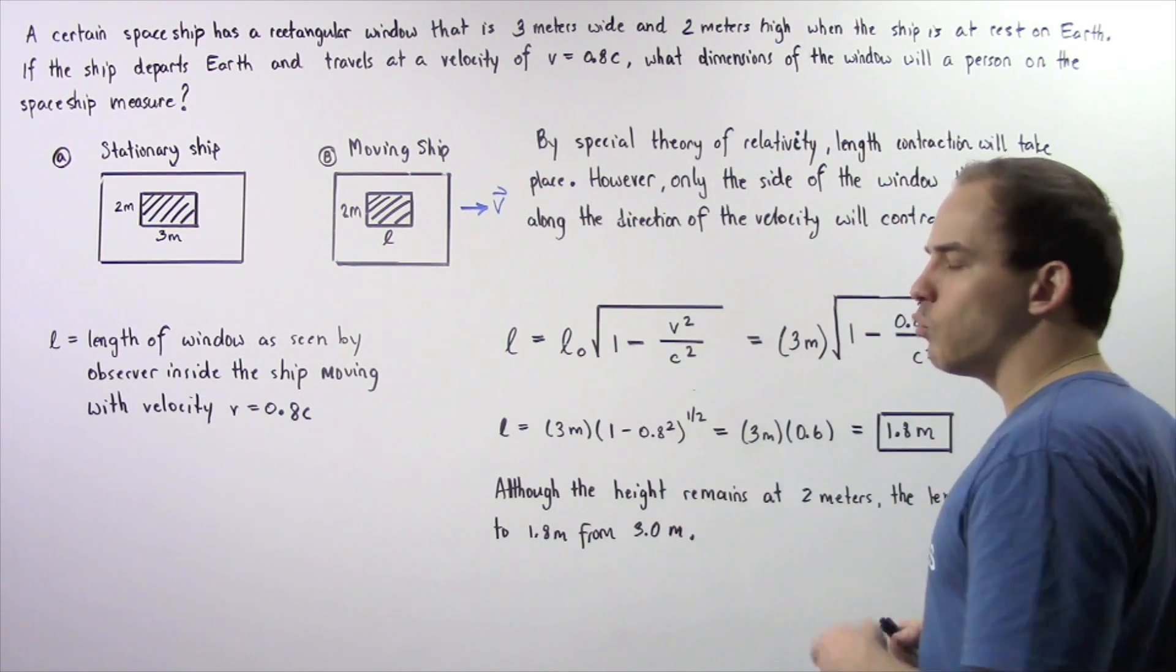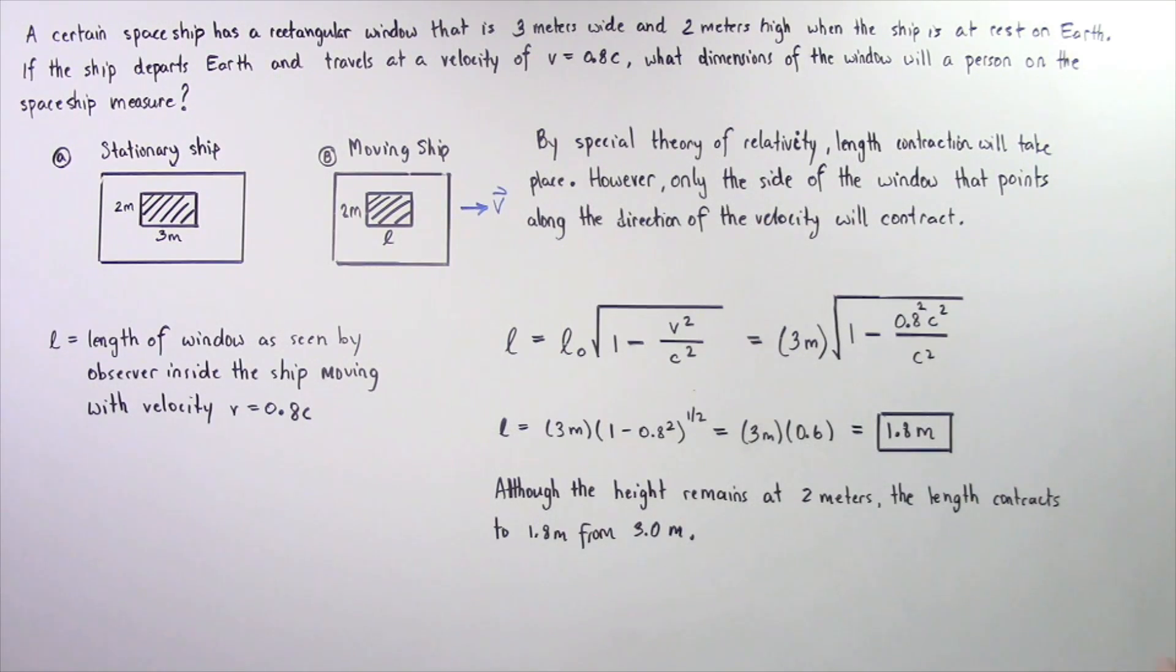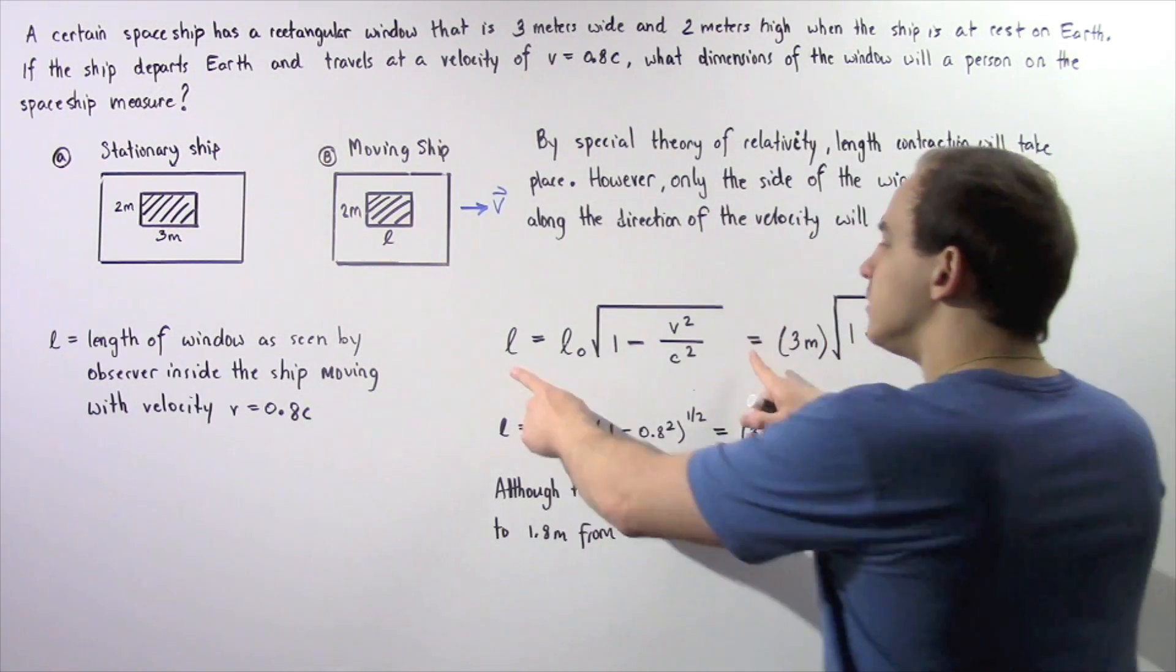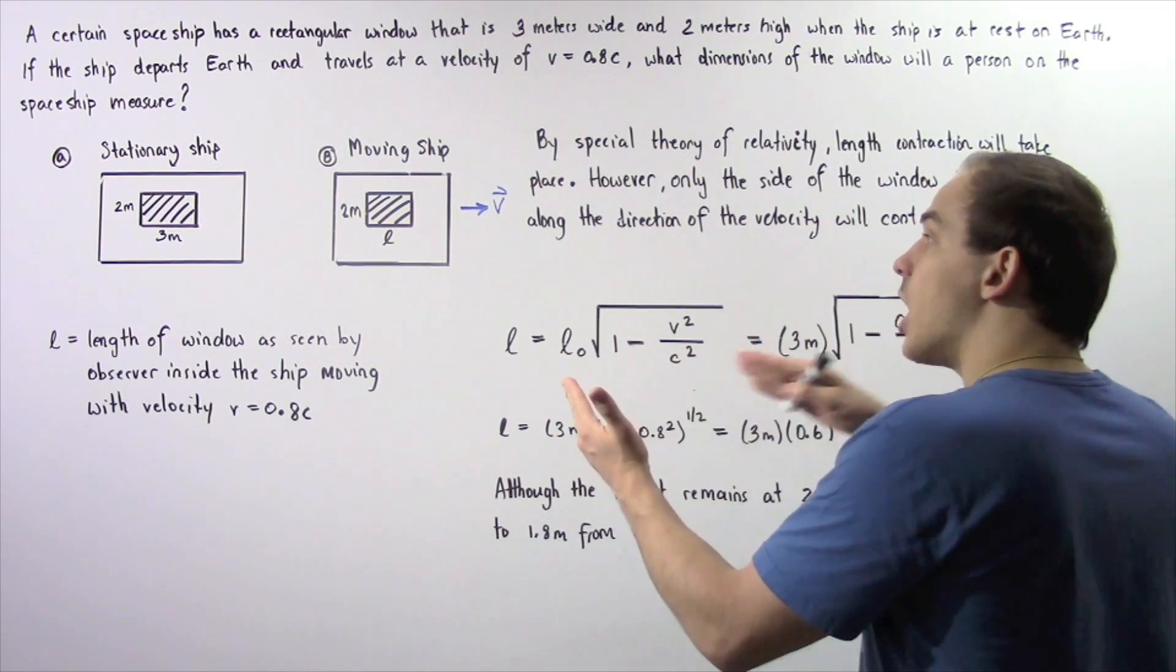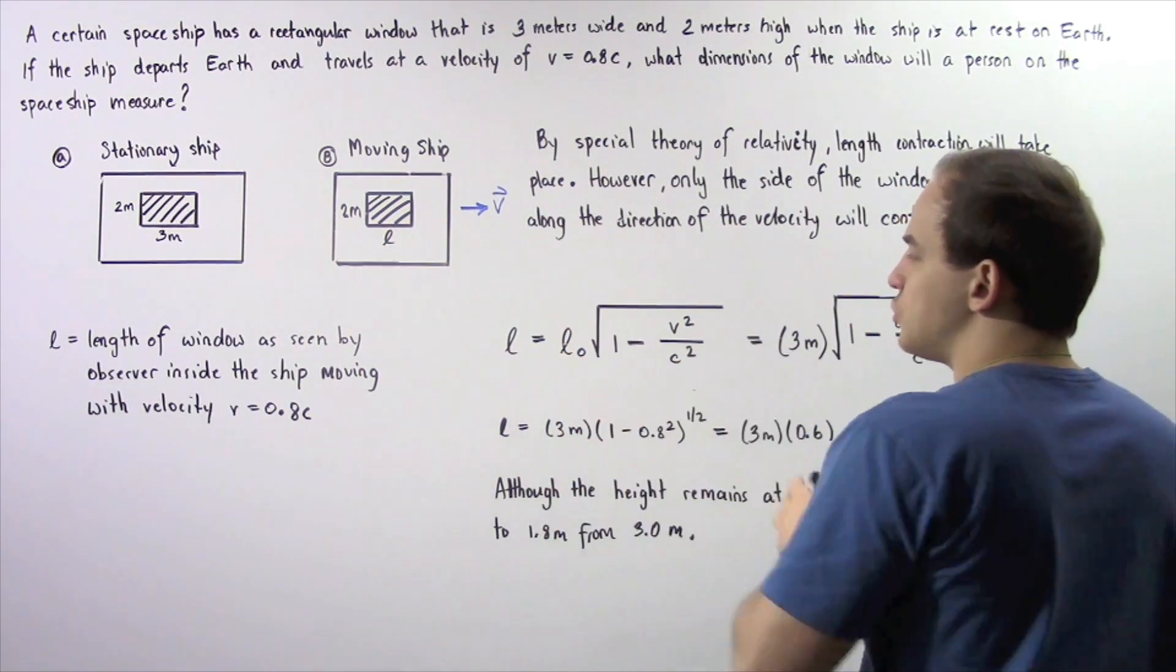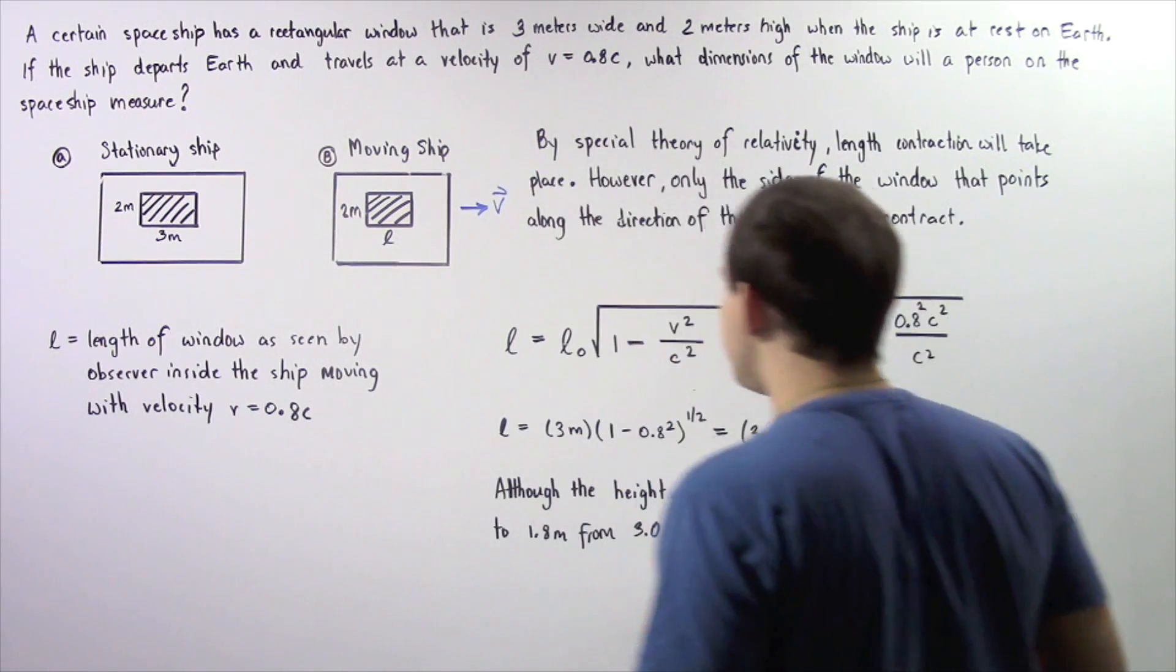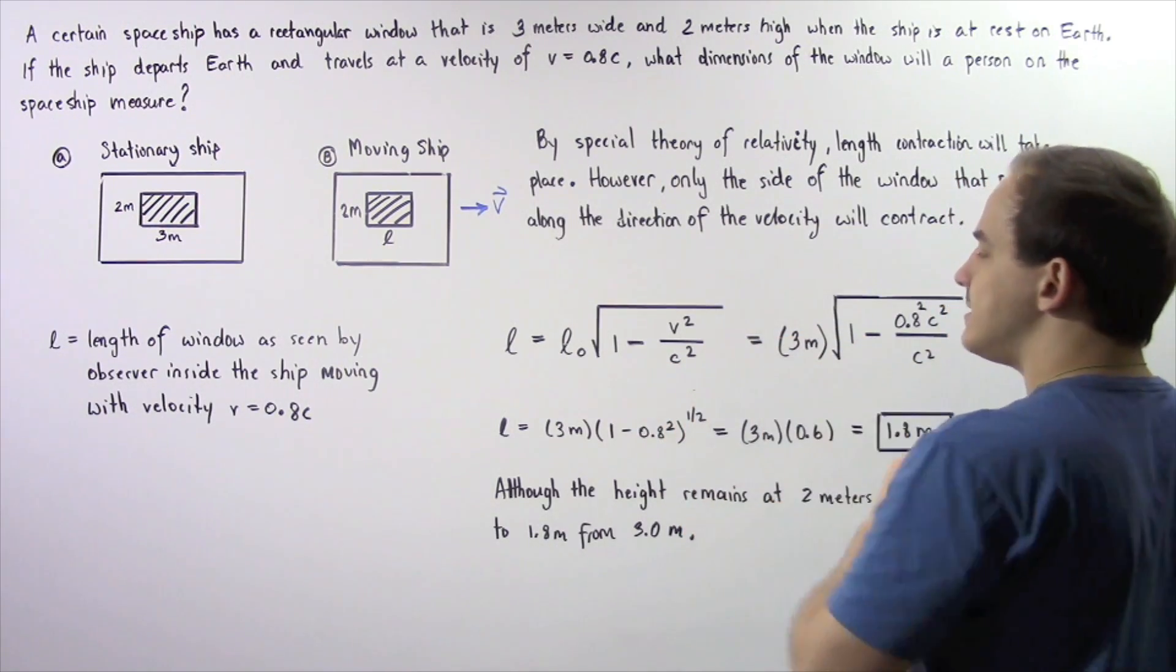So L represents the length of the window as seen by the observer inside that spaceship when the spaceship is moving with the velocity of V equals 0.8 multiplied by C, where C is the speed of light in a vacuum. So we want to apply the equation that deals with length contraction. So L, the length of our window when our spaceship is moving with velocity V, is equal to L0, our original length of our window when the spaceship is stationary, multiplied by the square root of 1 minus V squared divided by C squared.